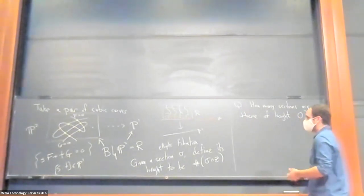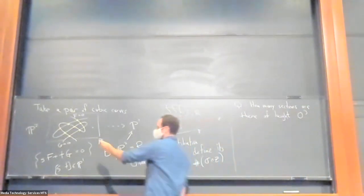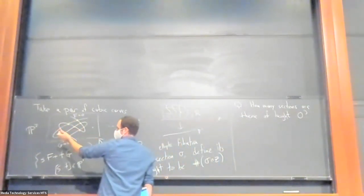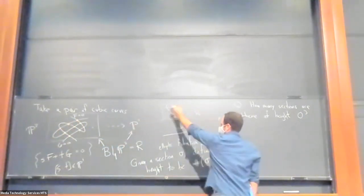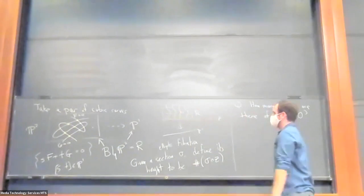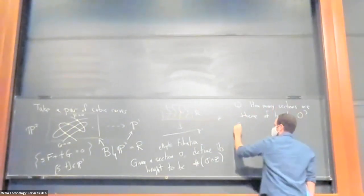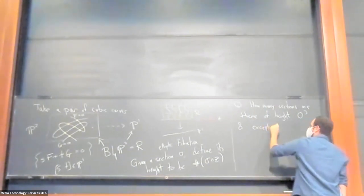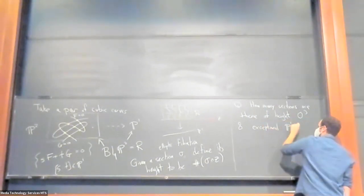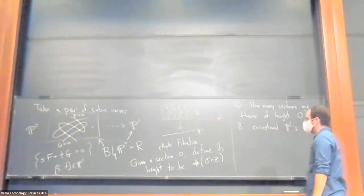So there's clearly going to be at least eight. So height zero means that you're disjoint from the zero section. So these yellow points over here, which correspond to the yellow sections over there, obviously don't meet the zero section. So you have eight, the eight exceptional divisors. But that's actually not all.